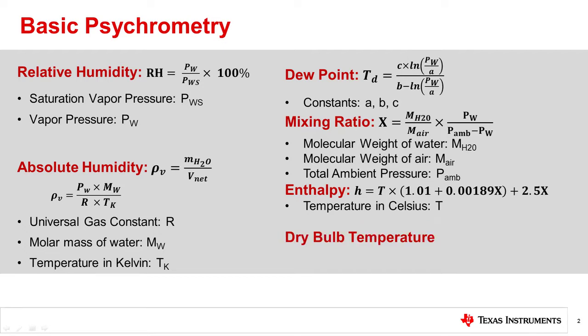Finally, we have dry bulb temperature, which is the temperature measured at a thermometer when it is shielded from radiation. This is often considered to be true ambient air temperature. Similarly, wet bulb temperature is the temperature measured at a thermometer wrapped in a wet cloth. The moisture allows evaporative cooling to occur on this thermometer, resulting in the temperature typically lower than the dry bulb temperature. We will cover these two quantities a little bit more when we discuss psychrometers.